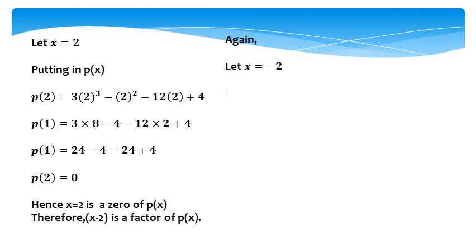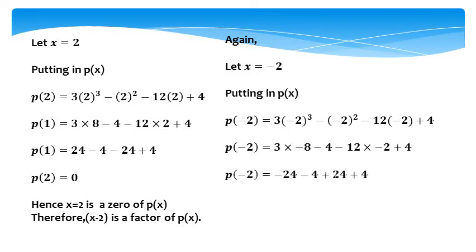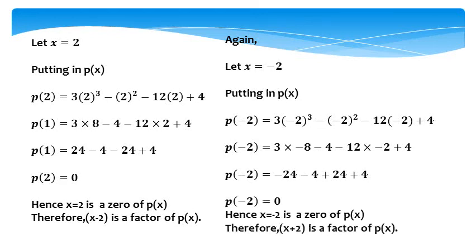Again, let x equal minus 2, putting it into the polynomial. After putting in the value of minus 2, the result is minus 24 minus 4 plus 24 plus 4. So p(minus 2) equals 0. Hence, x equals minus 2 is a zero of p(x). Therefore, (x plus 2) is a factor of p(x).